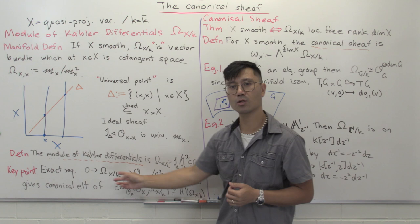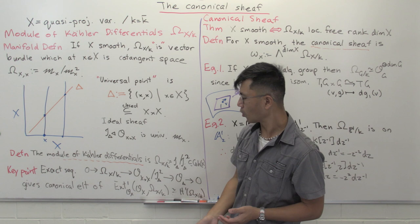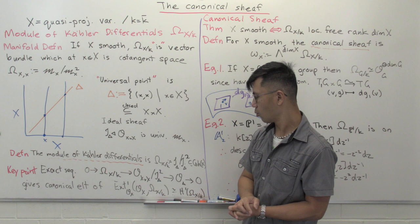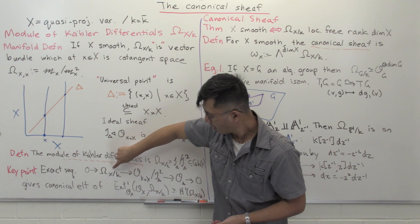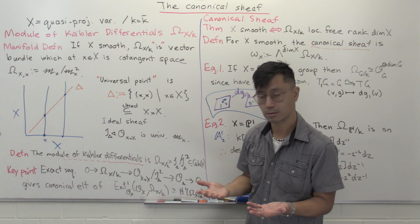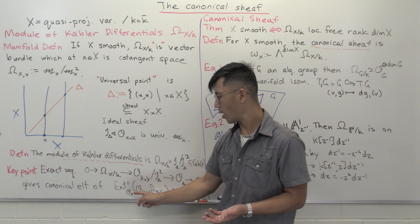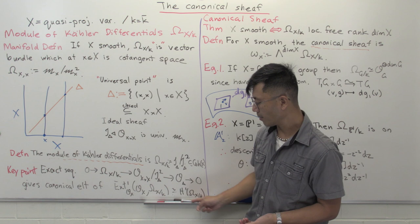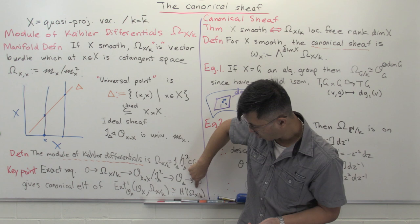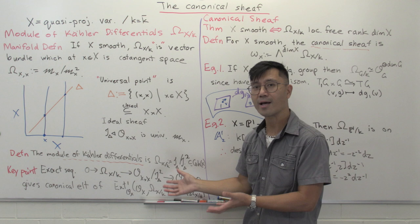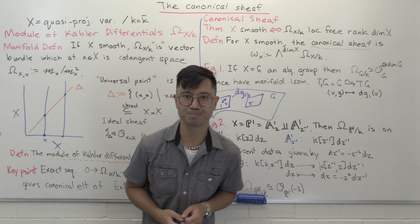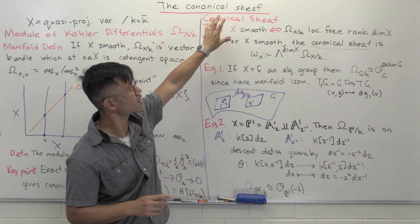Out of this you get a natural exact sequence that lives on X cross X, but you can push it down and think of it as an exact sequence on X. What you get is your module of Kähler differentials, and O_delta is just O_X. That means you get an element of the extension space Ext^1(O_X, omega X over k), or in other words a natural element of H^1, the first cohomology group H^1 of omega X over k. So just from the definition of the module of Kähler differentials you get this element of the extension space.